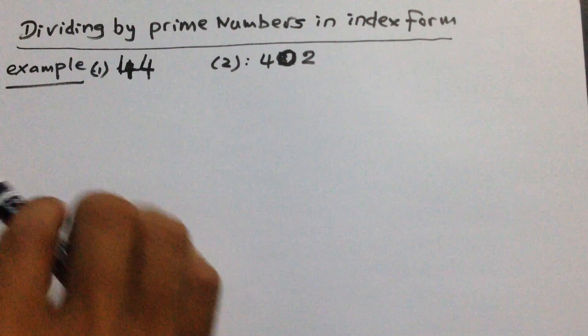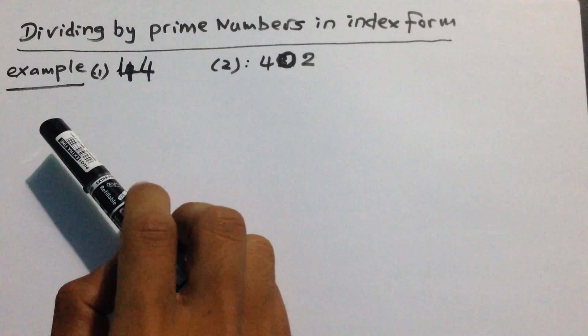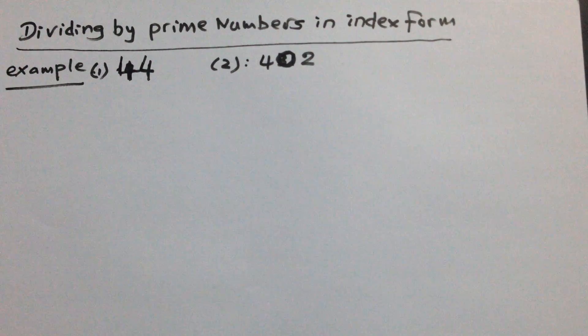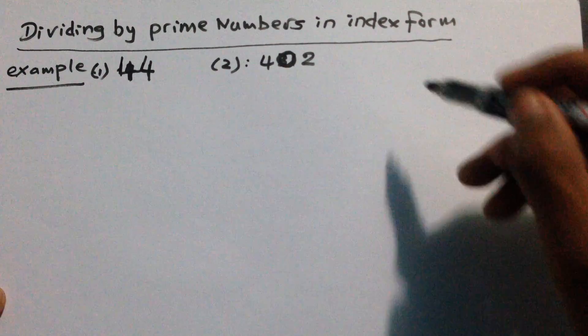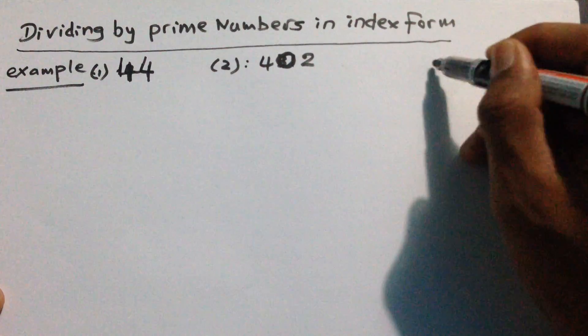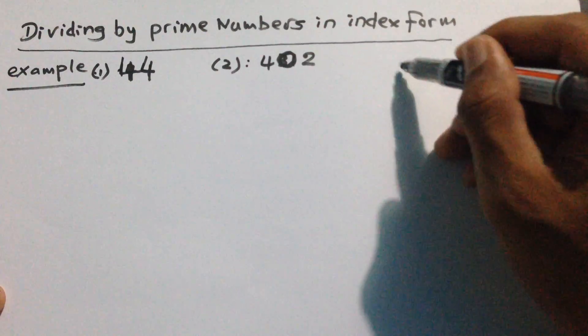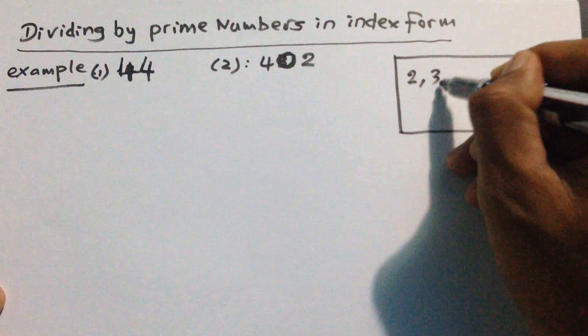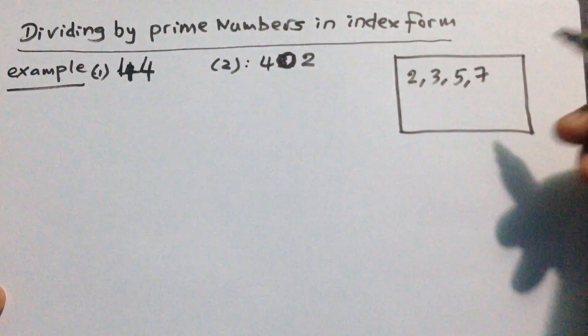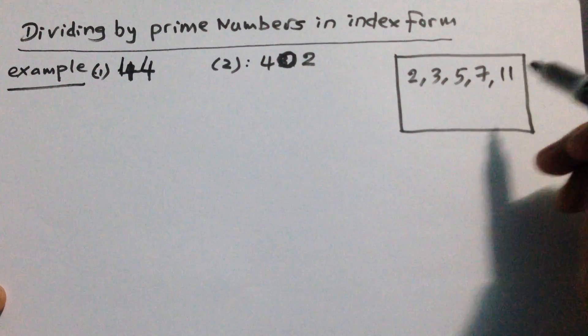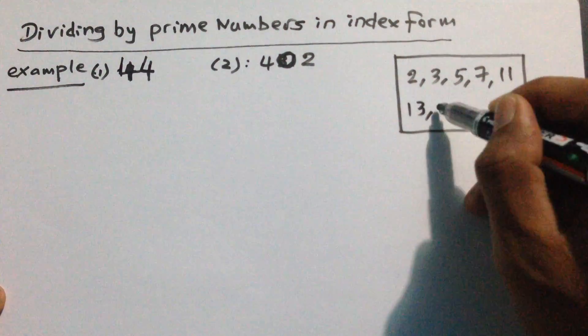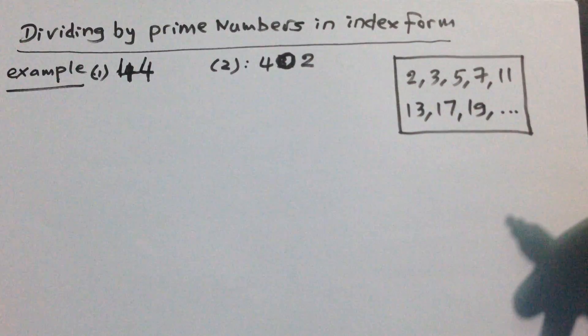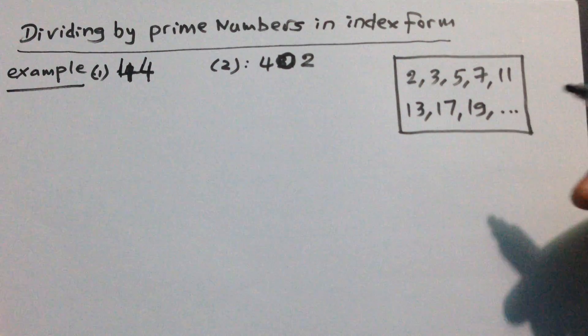Okay, today we study about dividing by prime numbers in index form. We have 44 and 402. Prime numbers are 2, 3, 5, 7, 11, 13, 17, 19, and so on.